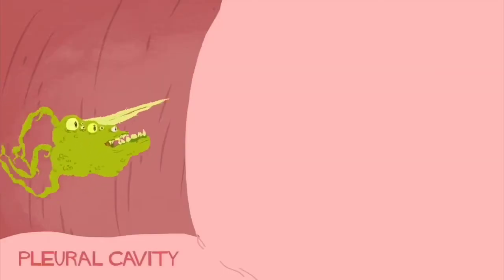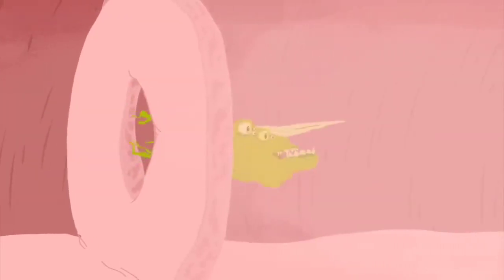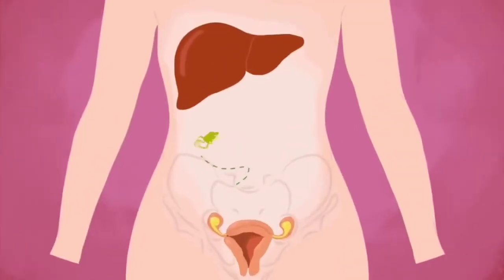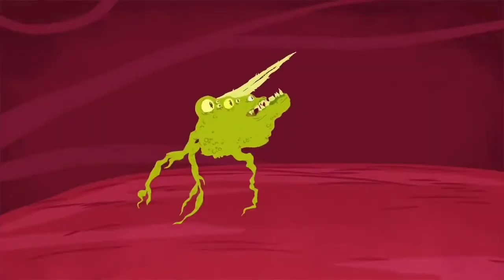In transcoelomic spread, malignant cells penetrate the covering surfaces of cavities in our body. These surfaces are known as peritoneum, and serve as walls to segment the body cavity. Malignant cells in ovarian cancer, for example, spread through peritoneum which connects the ovary to the liver, resulting in metastasis on the liver surface.